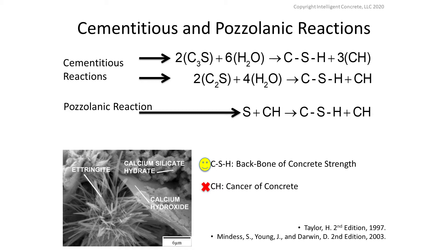From those reactions we get a byproduct — this cancer of concrete, calcium hydroxide, lime, portlandite. It neither bonds to itself nor anything else, and the presence of water will dissolve it back into solution, allowing more aggressive materials to migrate through that percolation of pore connectivity left by the dissolved calcium hydroxide. What we want to do is take some of that silica, that pozzolanic material, combine it with the calcium hydroxide to create more calcium silicate hydrate — the backbone of concrete strength. We used to be able to do that with Class F fly ash and silica fume, but nowadays with lower volumes, especially with the renewable energy movement, we need another solution.